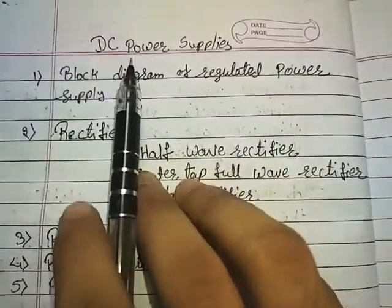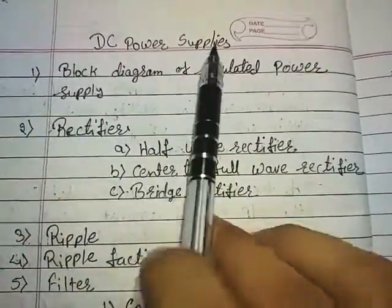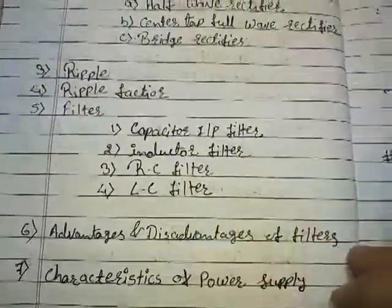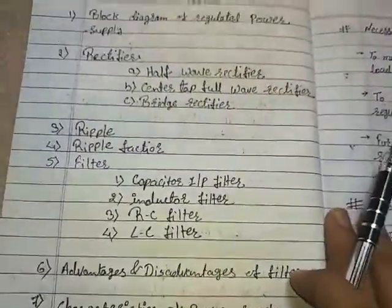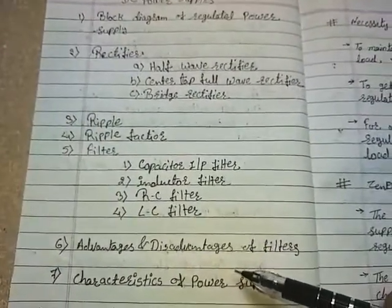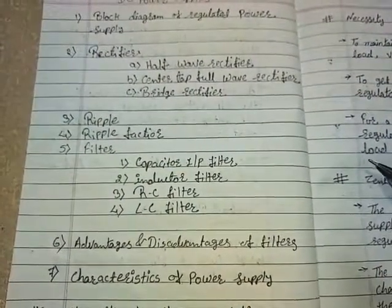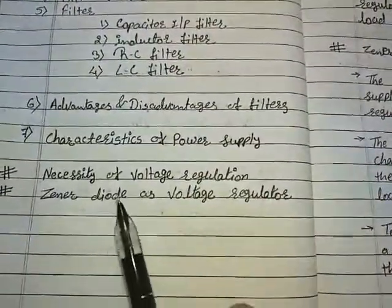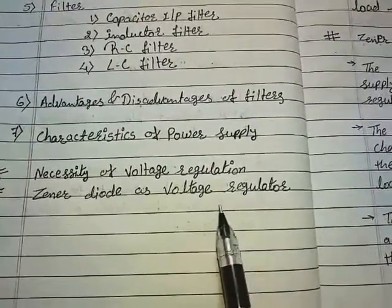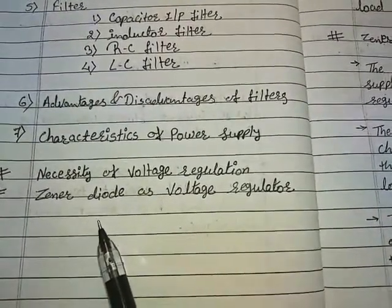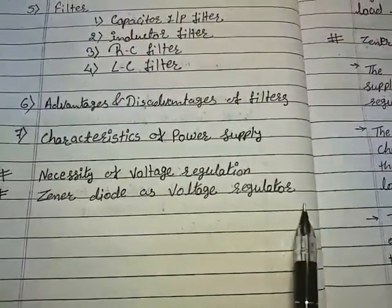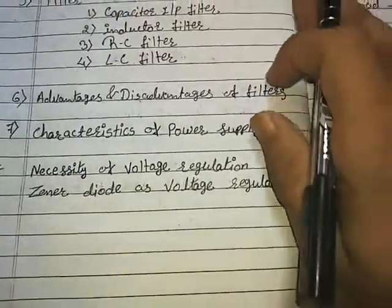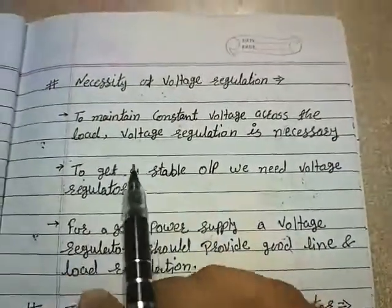Hello guys, so far in the chapter DC power supplies we have covered these topics. In case you missed these topics, the links are available in the description. Today we will learn the necessity of voltage regulation and how a zener diode can be used as a voltage regulator.